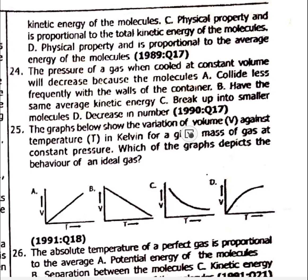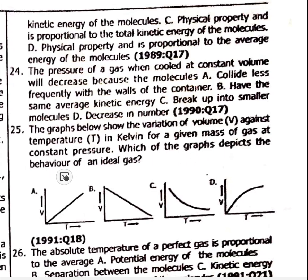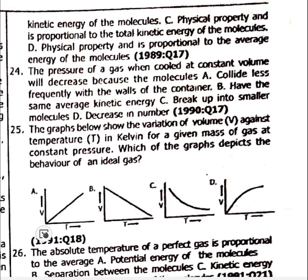Question 25: The graph shows variation of volume V against temperature in Kelvin for a given mass of gas at constant pressure. The graph that depicts the behavior of an ideal gas is option A — volume is directly proportional to temperature, which is Charles's Law.